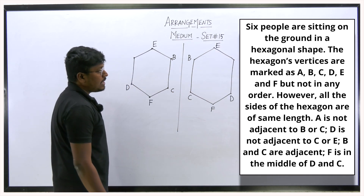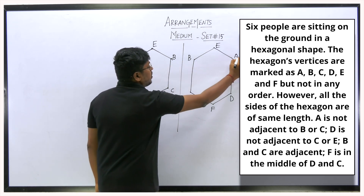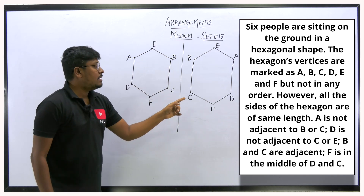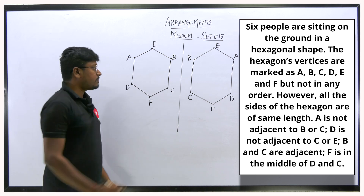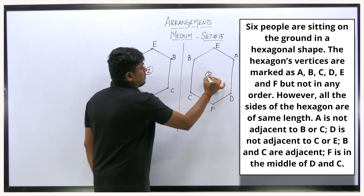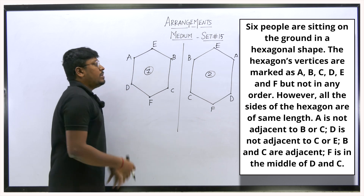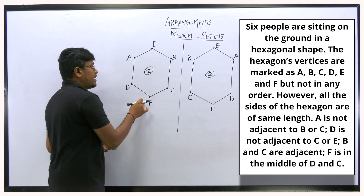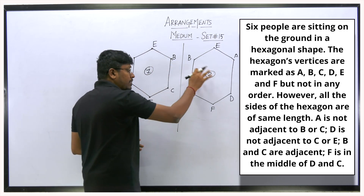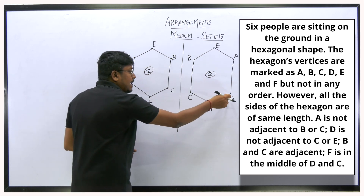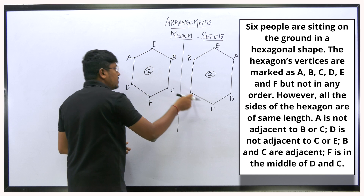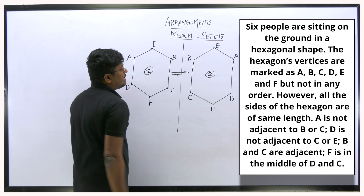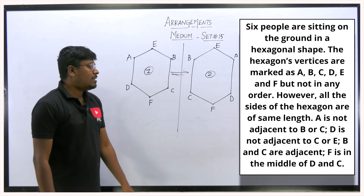The remaining letter is A. According to the first point, A is not adjacent to B or C, and that condition holds in both possible diagrams. So we have Possible Diagram 1 and Possible Diagram 2. In both cases: E is opposite to F, D is opposite to B, and A is opposite to C. Both diagrams give the same opposite-pair results.